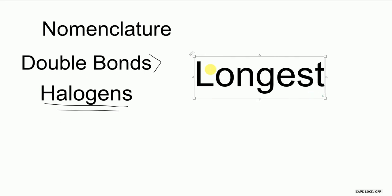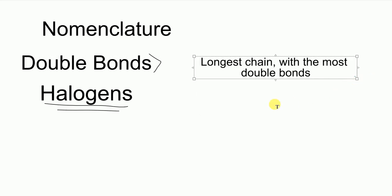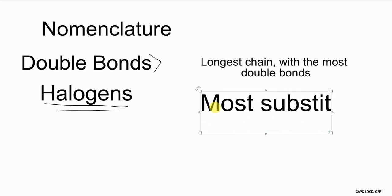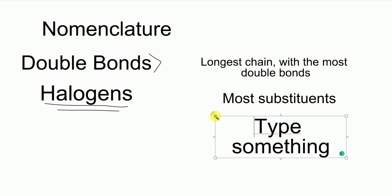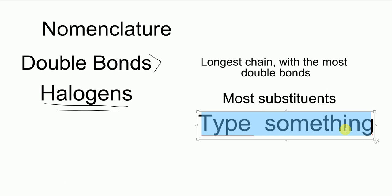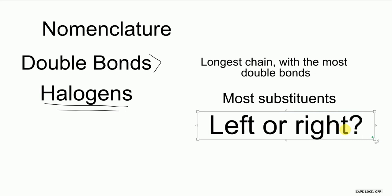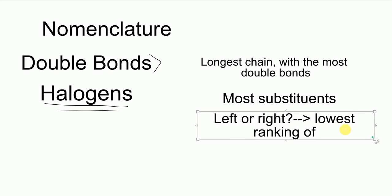All the old rules still apply, and essentially now we're looking for the longest chain with the most double bonds. That's the difference now. Halogens and other things fall under most substituents. So I find the longest chain with the most double bonds, and then if I have two competing chains that are the same length, I look at which one has the most substituents. When I find the chain with the most substituents, I have to find which direction to label it from — left or right — determined by the lowest ranking of substituent groups.